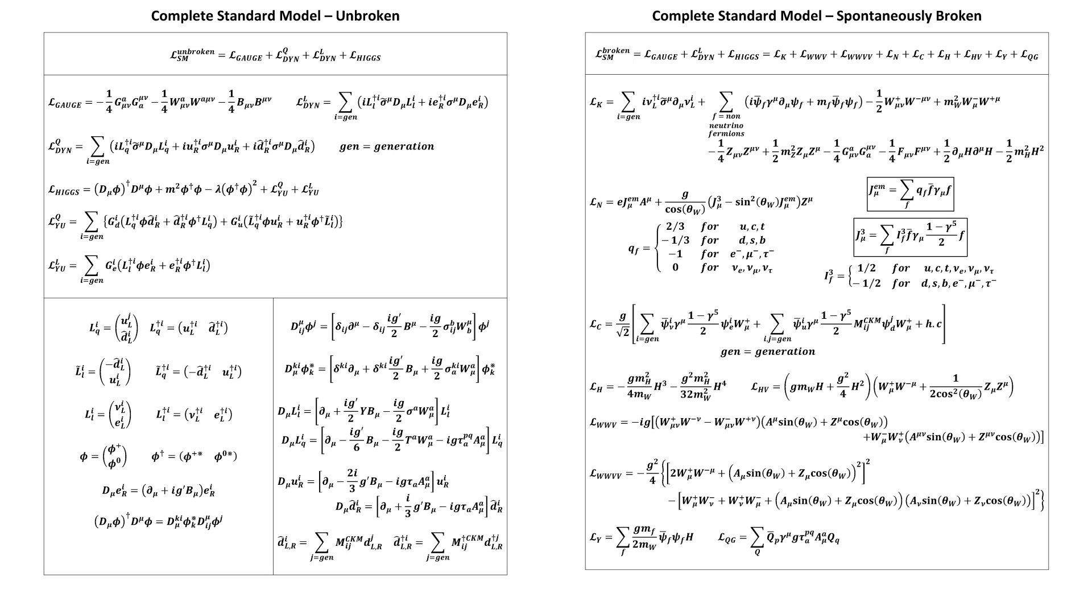Note that because we've added an SU3 invariant QCD sector, the unbroken Lagrangian now has SU3 direct SU2 direct U1 gauge symmetry, the famous standard model gauge group.